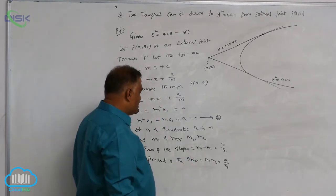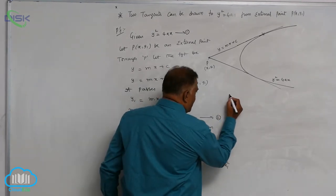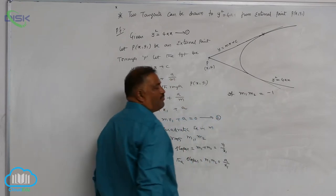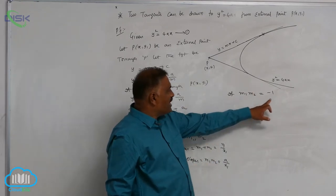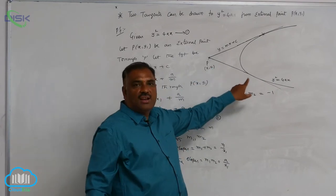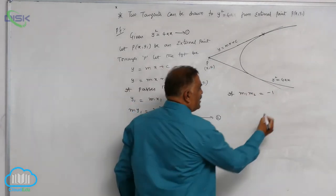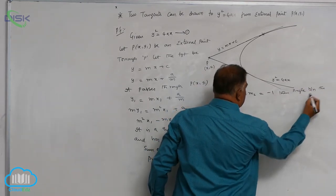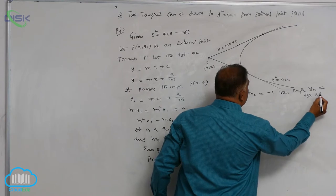Further, we can see a special case: if m1 m2 is equal to minus 1, the two tangents are at right angles. Then the angle between the tangents is 90 degrees.